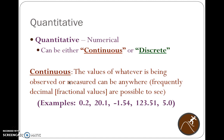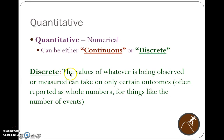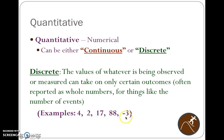Some things simply cannot be measured on a continuous scale — some things are generally measured in whole numbers. Discrete values are values of whatever is being observed that can only take on certain outcomes, often reported as whole numbers for things like the number of events. Examples might be 4, 2, 17, 88 — or maybe you lost three people. How many people entered an amusement park on a particular day? How many study participants were enrolled?